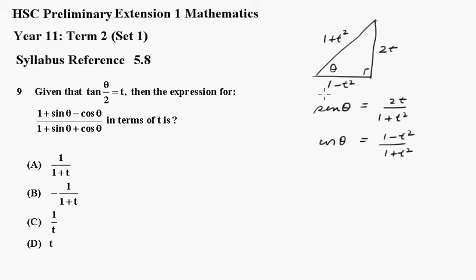Of course tan is 2t over 1 minus t squared but we won't be using that in this case. So this expression becomes 1 plus 2t over 1 plus t squared minus 1 minus t squared over 1 plus t squared.